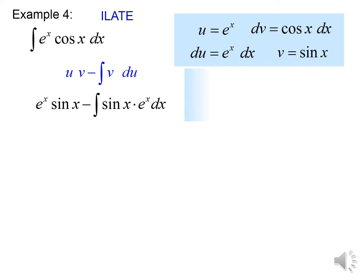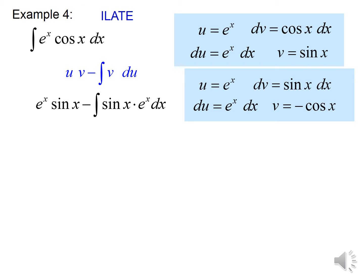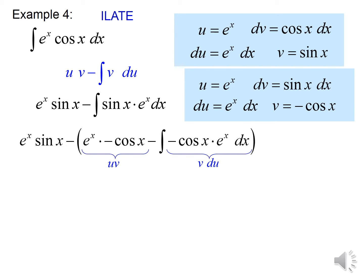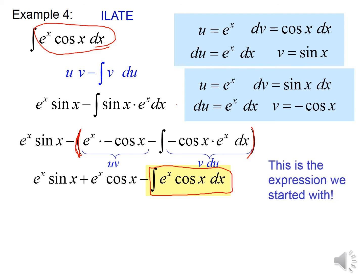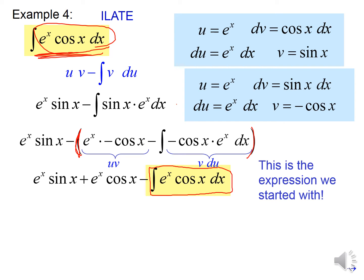Notice I'm going to have to use integration by parts again on the integral of sine X times e to the X. Using integration by parts again, I continue to let U equal e to the X, dU equal e to the X, and dV equal sine X. After substituting back in and cleaning up the negatives, the parenthesis covers both terms so I have to distribute the negative. Notice that what we get is the same as what we started with.